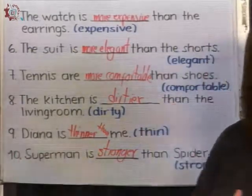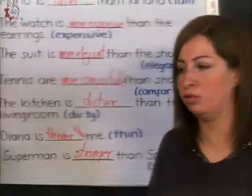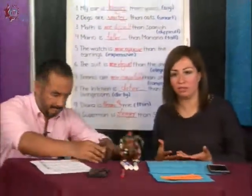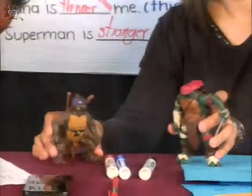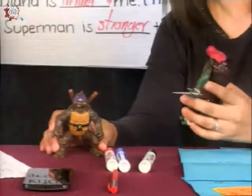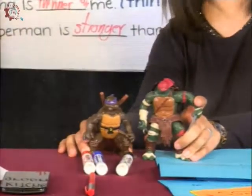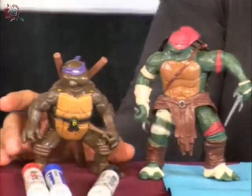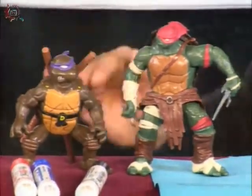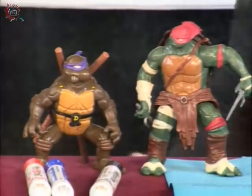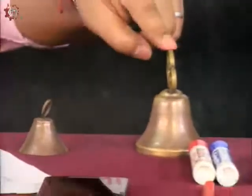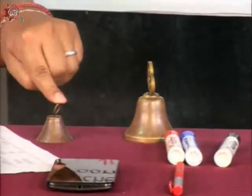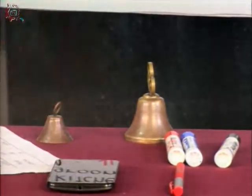Vamos a hacerles unos ejemplos. Estos ejemplos los tienen en sus notas, en sus libretas. Es importante que los sigan practicando. For example, here we have two turtles — Donatello and Rafael. Rafael is bigger than Donatello. Donatello is shorter than Rafael. Also, I think this bell is noisier than this one.